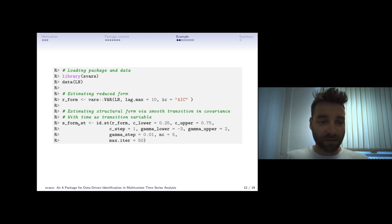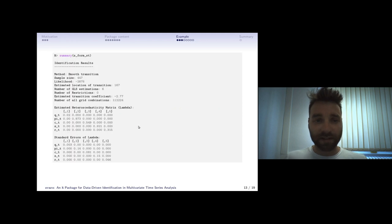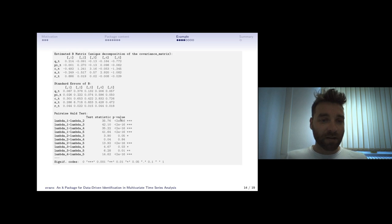The resulting object is S form ST. When we look at the result we see the summary of some general information like likelihood and sample size. And here the estimated heteroscedasticity matrix, so this is the change in the covariance of the structural shocks.